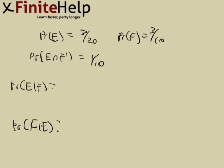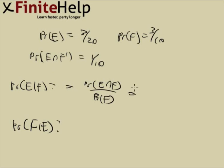As with all conditional problems, the first step is to break it down into left intersect right over the thing on the right. F is already given, so that's easy — 3 tenths.